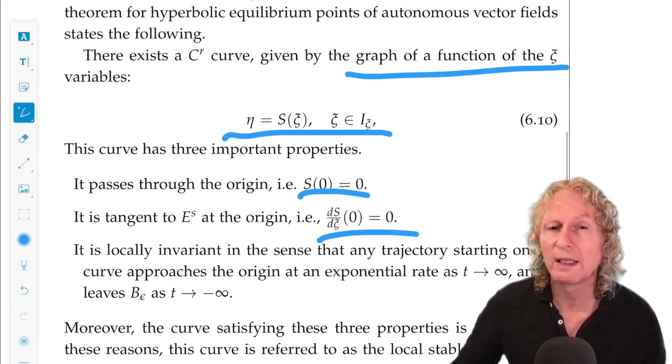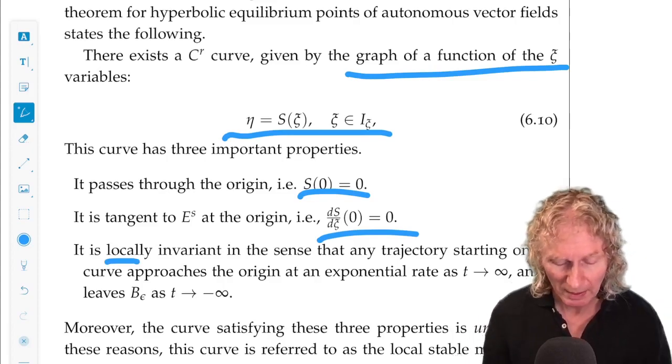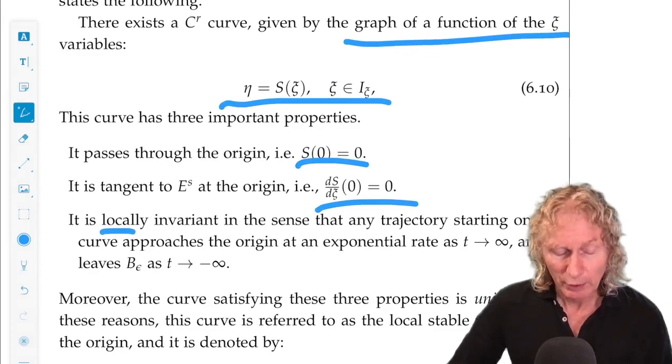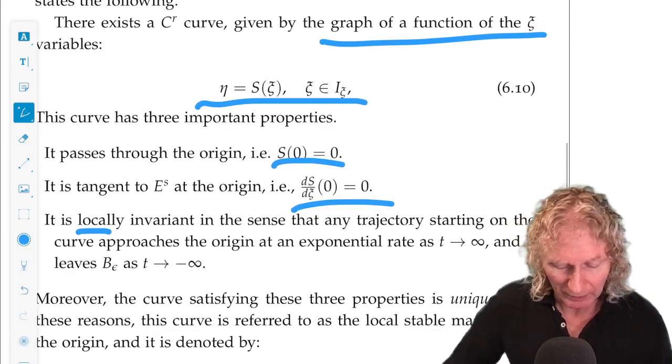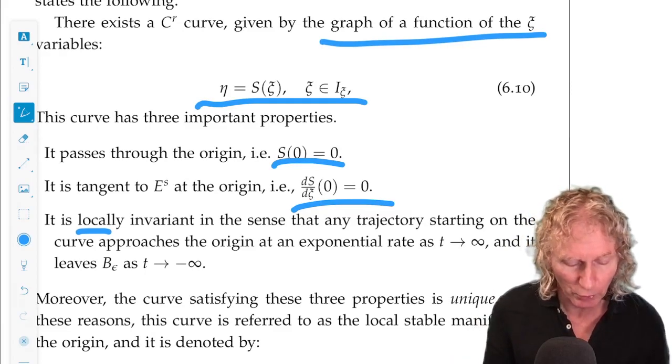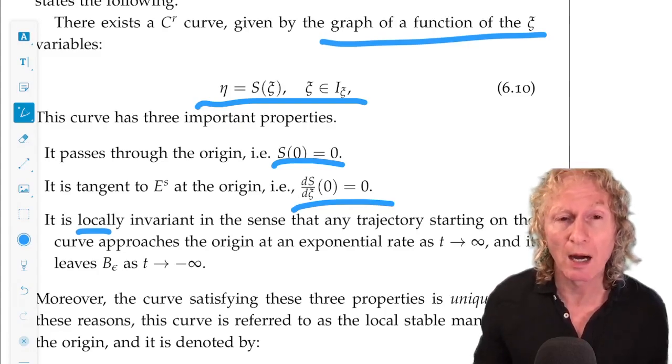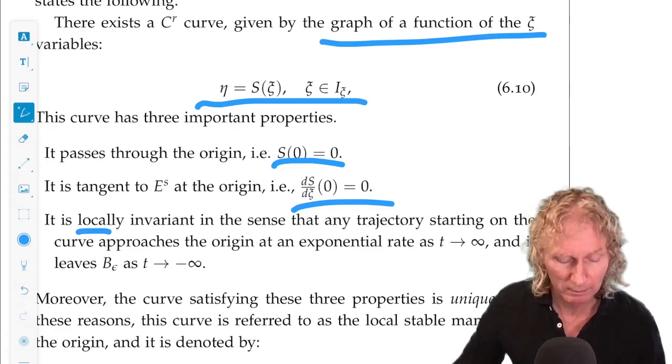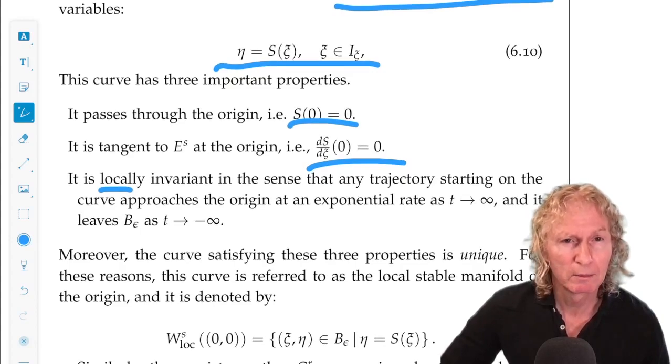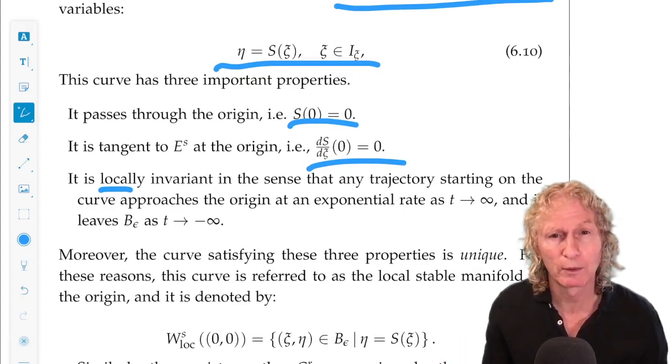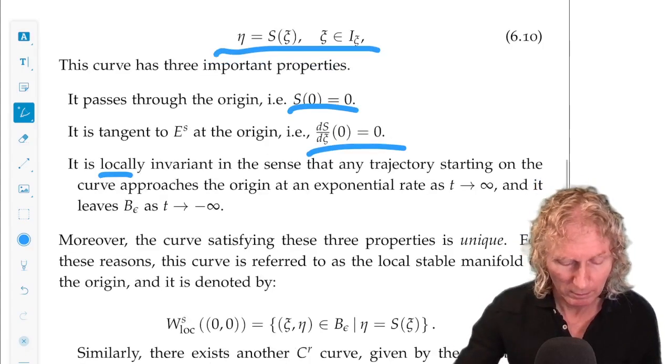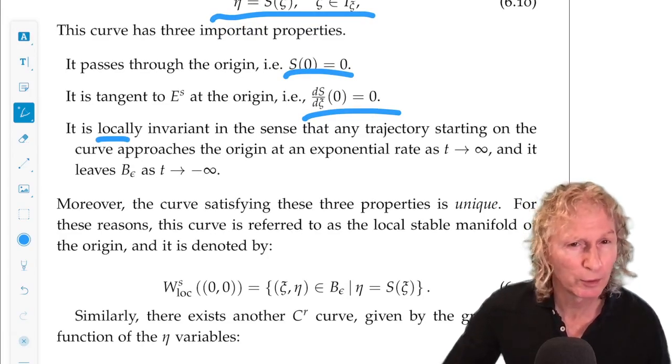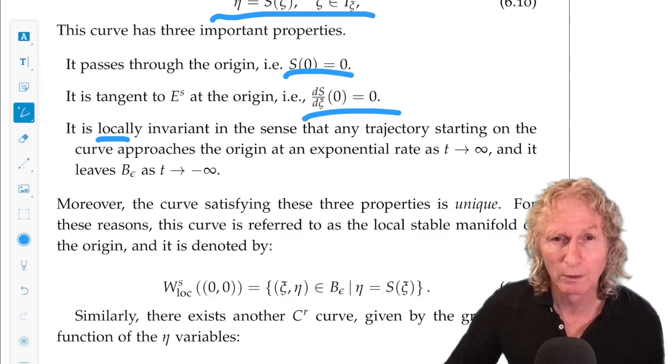And it's locally invariant. This is a new term. In the sense that any trajectory starting on this curve stays on the curve and approaches the origin at an exponential rate as T goes to infinity. And it leaves the box as T goes to minus infinity. That's the locally invariant part. The curve can leave, but only by passing through the boundary. And this curve is unique.